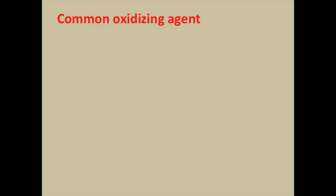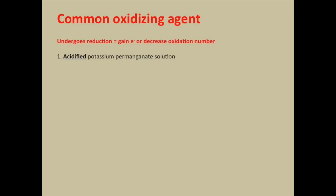Now we're going to see some common oxidizing agents used in the laboratory. First, a quick revision on what is meant by oxidizing agent. An oxidizing agent undergoes reduction, which means it gains electrons or decreases in oxidation number. The first one we're going to use a lot is the acidified potassium permanganate.